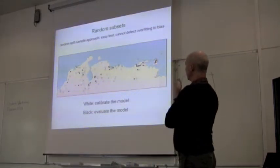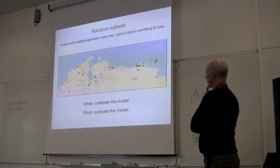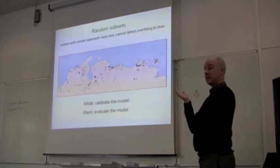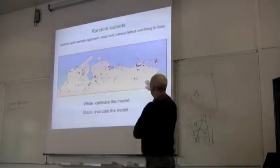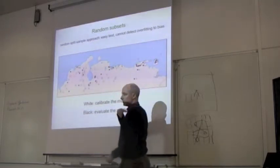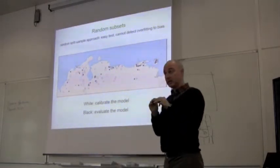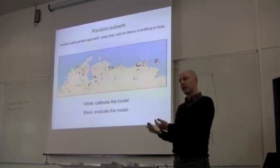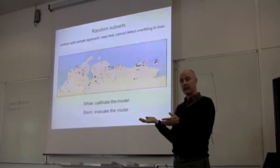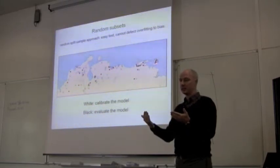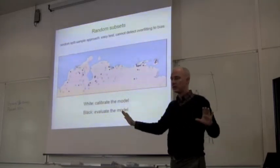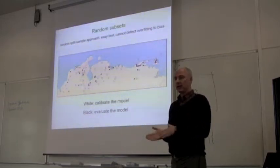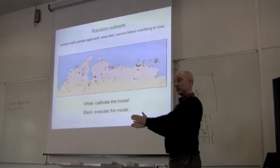In the traditional approach, called the random split sample approach, we divide our training and test points completely randomly. But this is a fairly easy test, especially if we have records close to each other and especially if sampling is biased in space. This kind of test can detect overfitting to noise, but it can't detect overfitting to any bias — because if we're dividing these records randomly, the same bias in the overall data set is going to be preserved in both the training set and the test set.